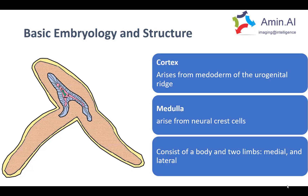Regarding the basic embryology of the adrenal glands, they are a paired structure seen in the bilateral suprarenal regions. The gland has two components: the cortex, which is the outer part, and the medulla, which is the central part. The cortex is derived from the mesoderm, whereas the medulla arises from the neural crest cells, which are an ectodermal derivative.